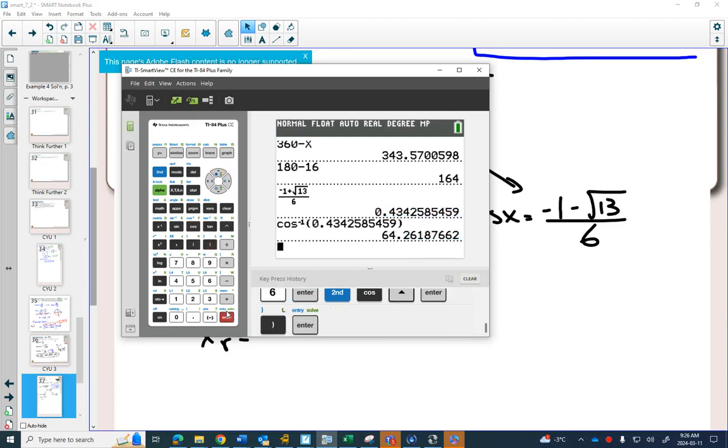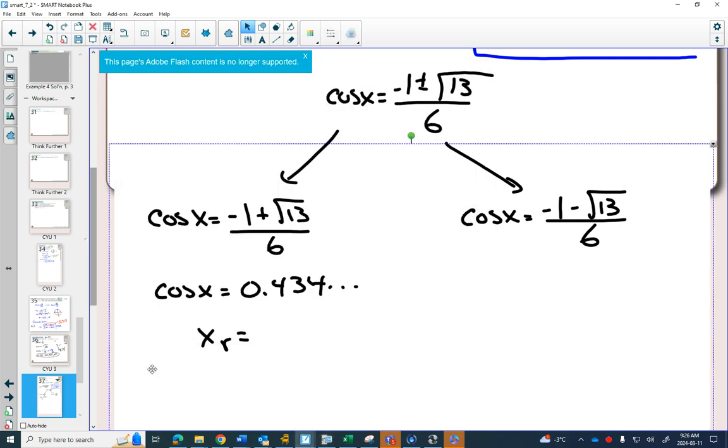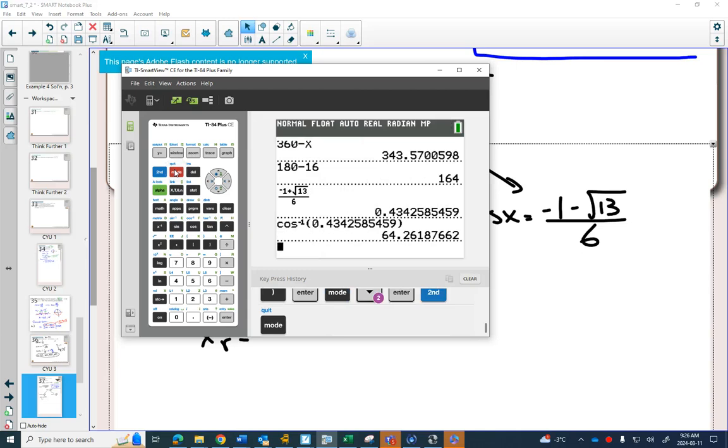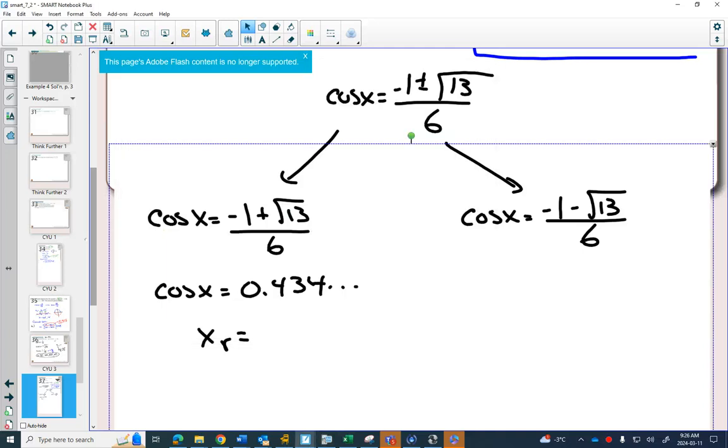So my reference angle on this side will be cos inverse of this answer: 64.26 degrees. I'm still in degrees. This question is in radians, right? Okay, so I'm going to go back to my calculator. I'm going to get good at switching from radians to degrees in this unit.